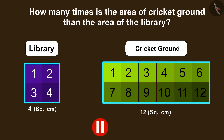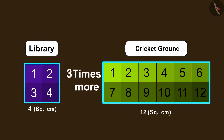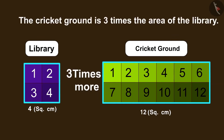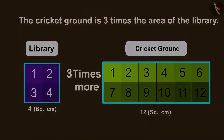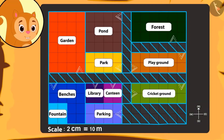You can pause the video to find the answer. Absolutely correct, children — the area of the cricket ground is 3 times the area of the library. Chanda is surprised to know how big the cricket ground is.